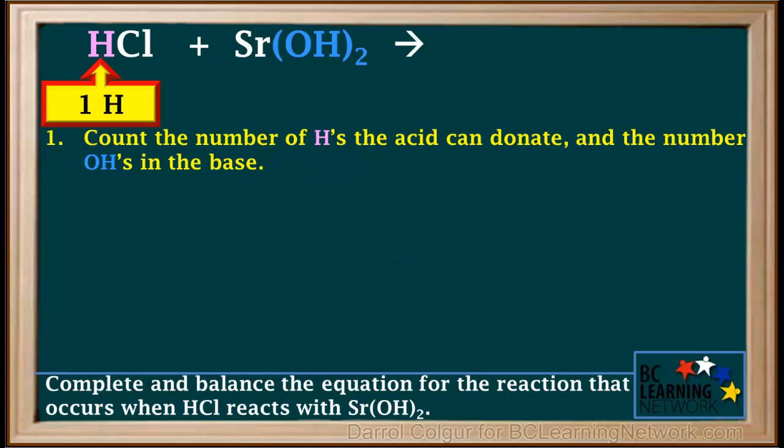We see that the acid, HCl, has one H it can donate, and the base, Sr(OH)₂, has two OH's in its formula.